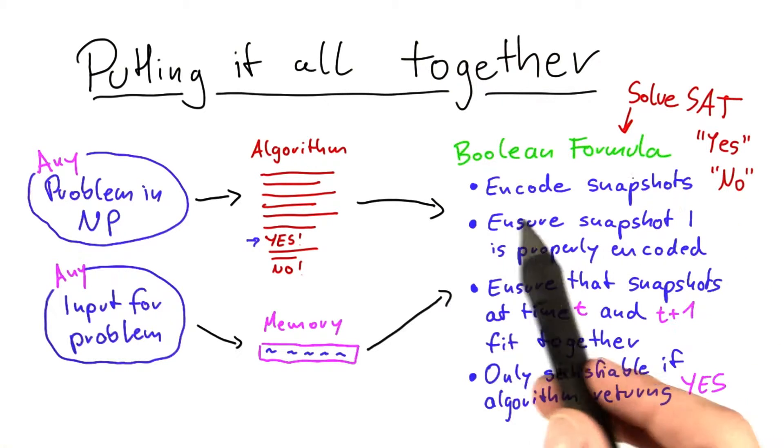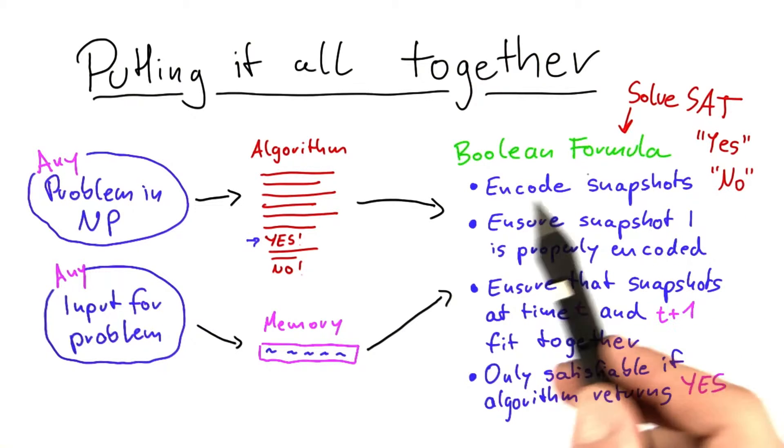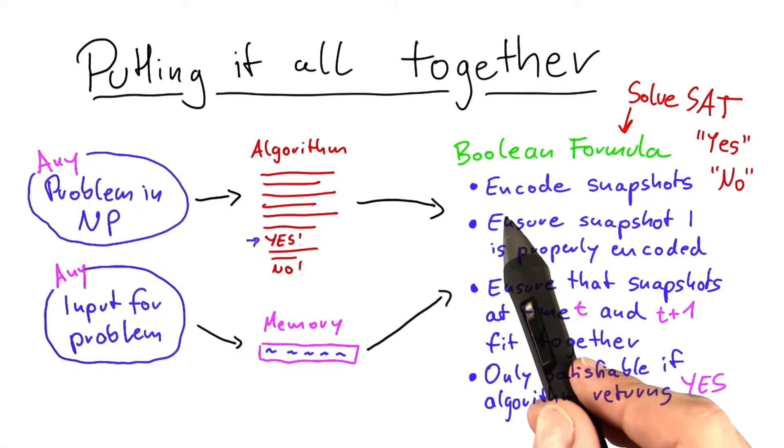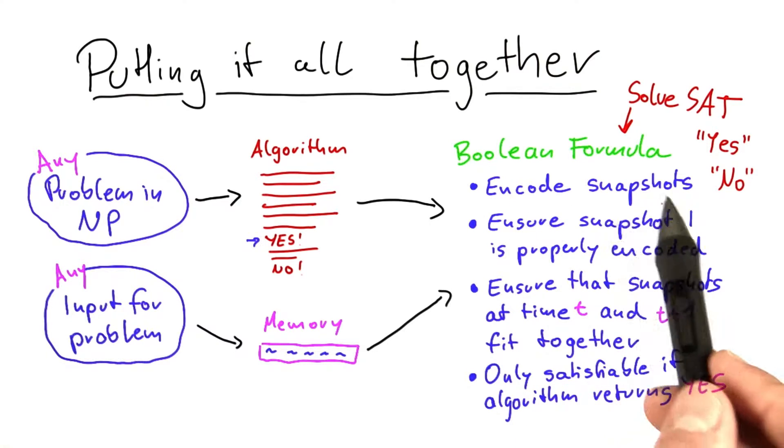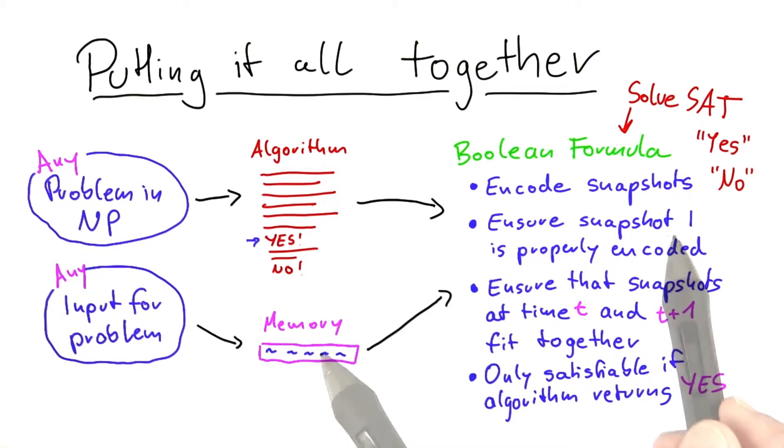If it returns yes, that means that there is a satisfying assignment for this Boolean formula. And a satisfying assignment will have the following property. First of all, it will encode valid snapshots of where the algorithm is and what's in the memory.